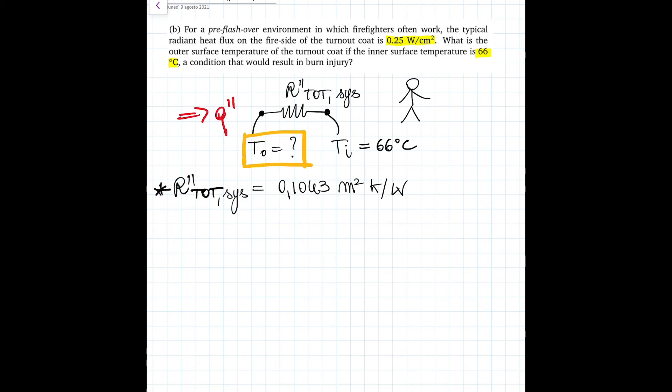As you can see here, before starting the recording, I drew a simplified version of the system. Actually, I represented it by a single thermal resistance. Indeed, I could do that just because we had calculated it in the previous part, in part A, and we also found its value of 0.1043 meters squared Kelvin over watts.